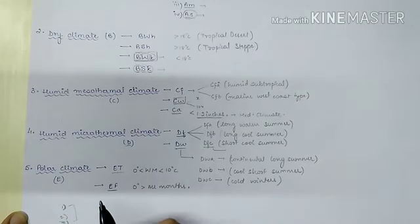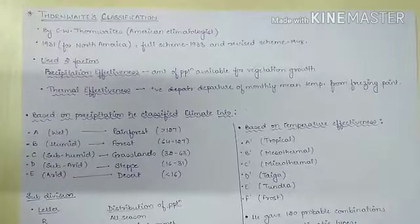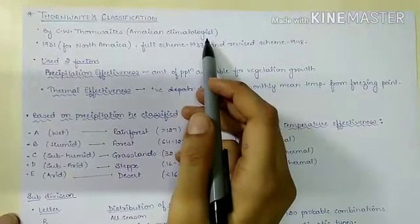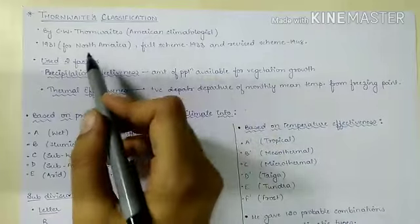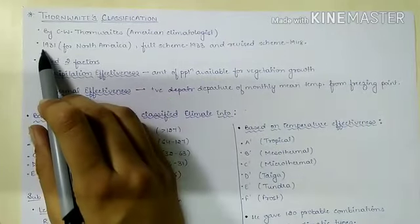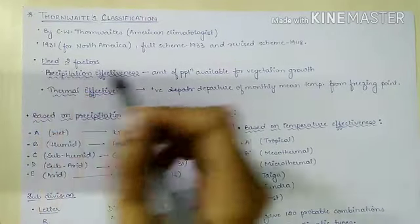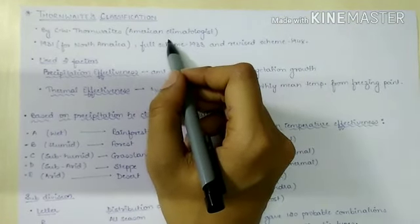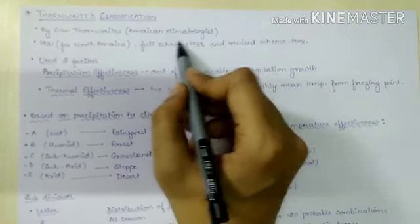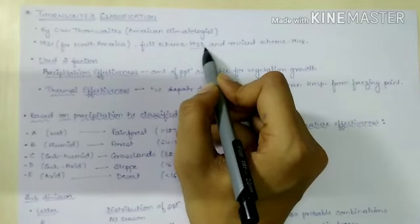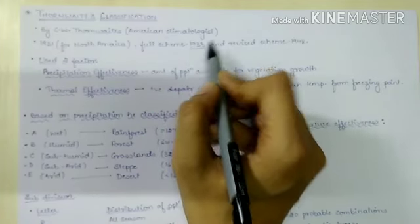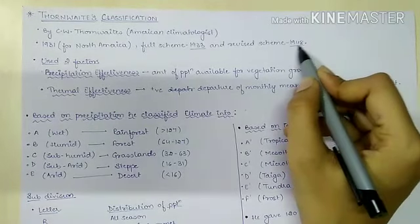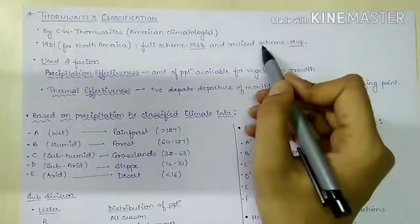Now we move to Thornthwaite's classification. Thornthwaite was an American climatologist who gave his classification for North America in 1931, then gave the climatic classification of the whole world in 1933, and lastly revised his scheme in 1948 for the whole world.